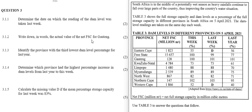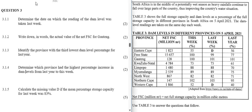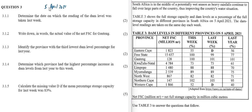Let's go to the questions. 3.1.1: determine the date on which the reading of the dam level was taken last week. Remember, the date of the readings was 5 April 2021. So what would the date be last week? If we want to go back to last week, that means we need to go back 7 days.